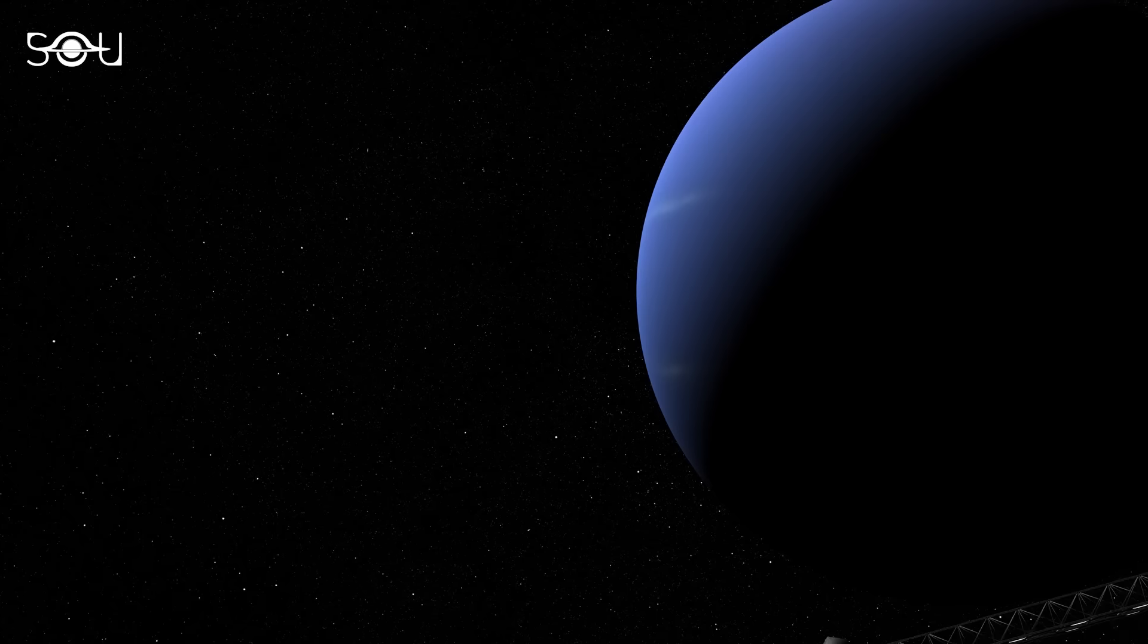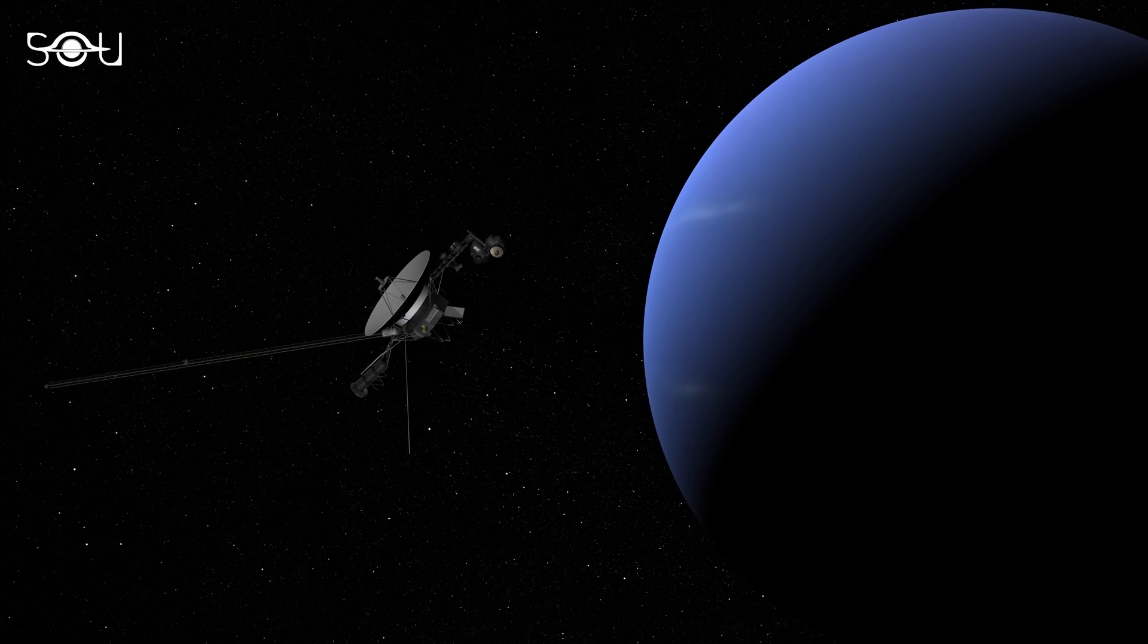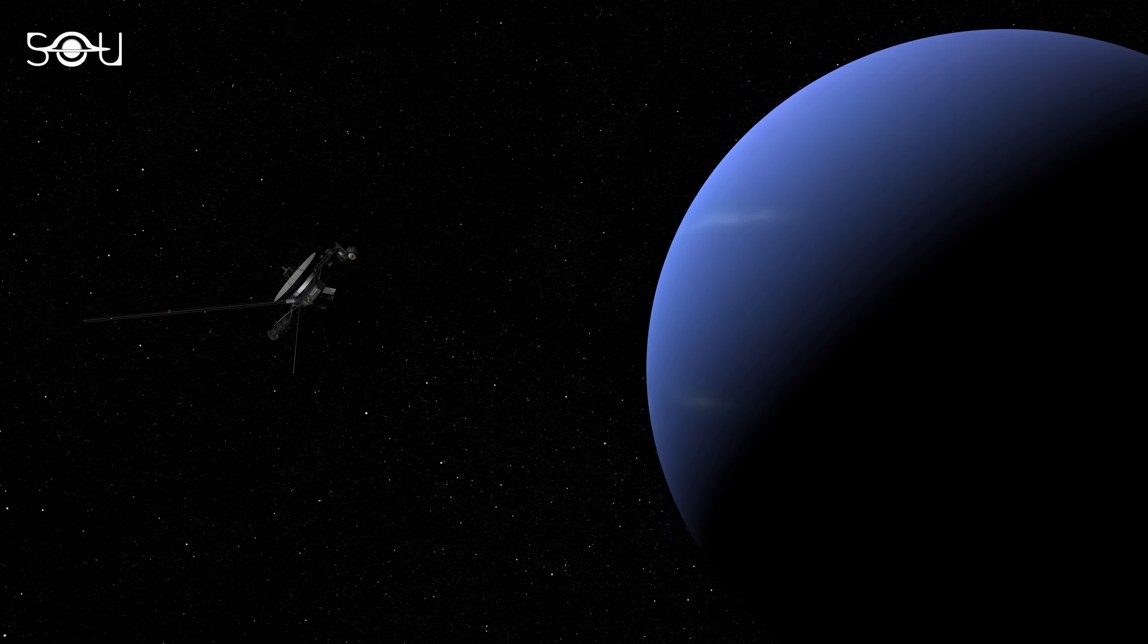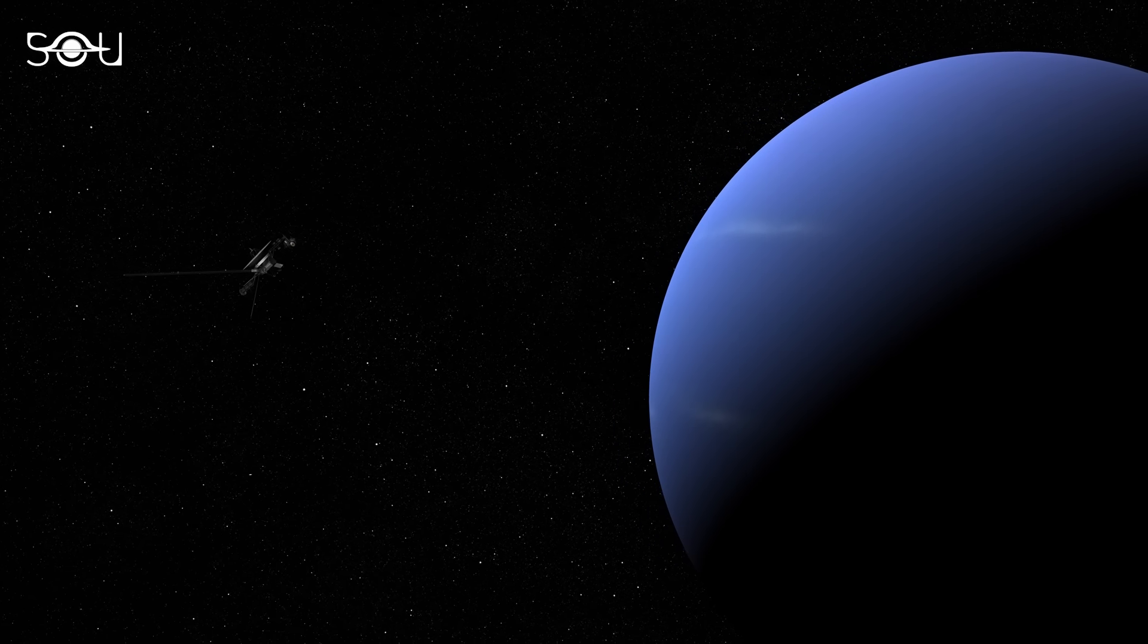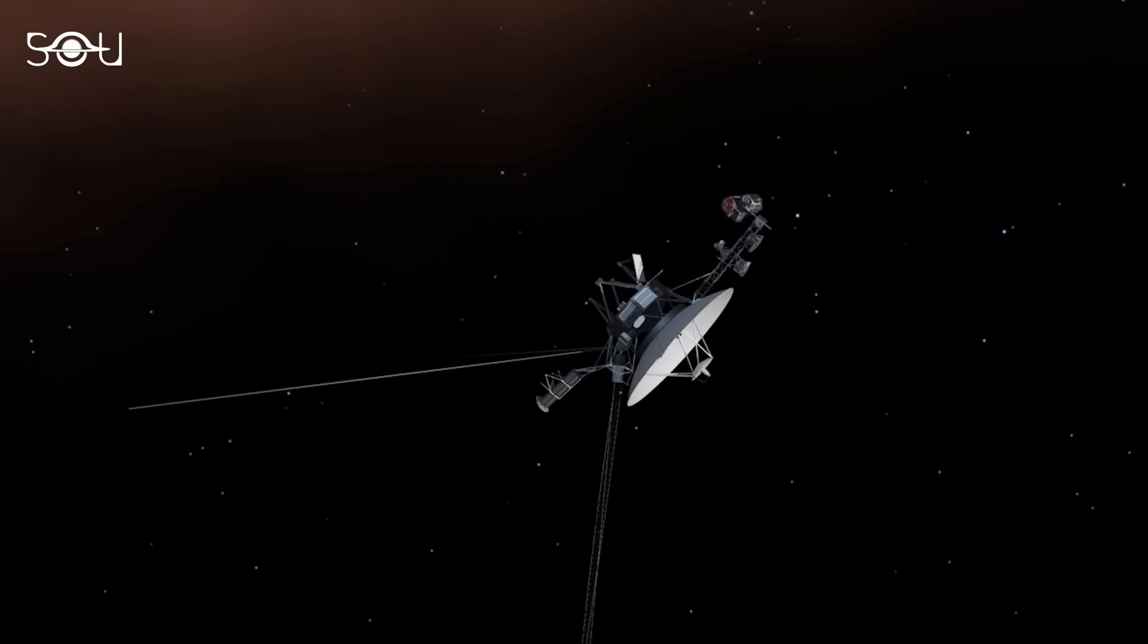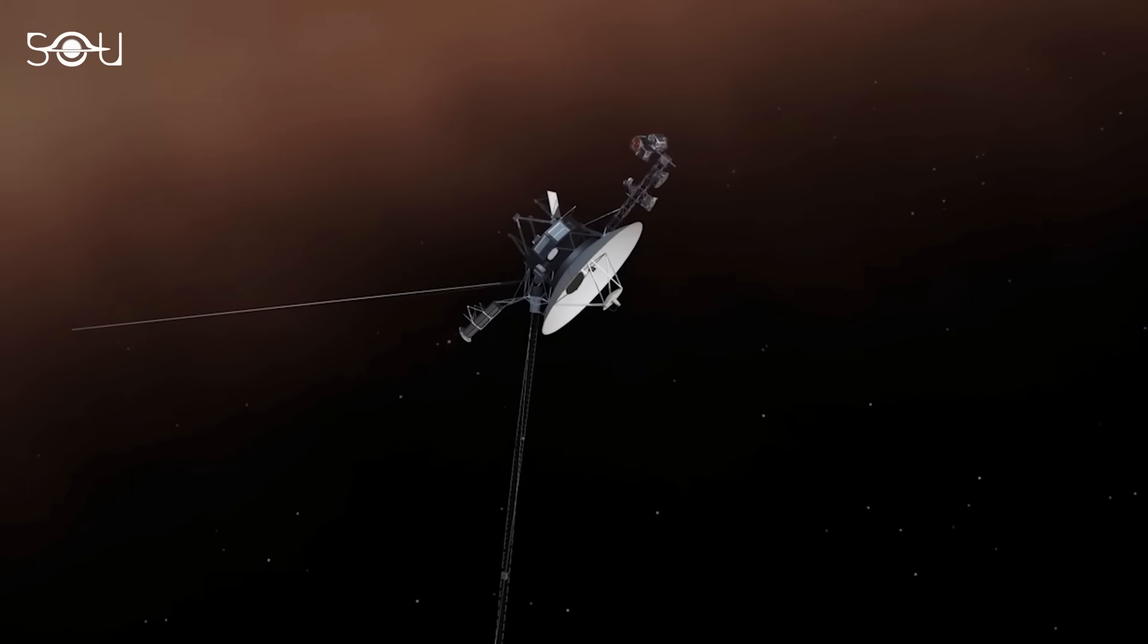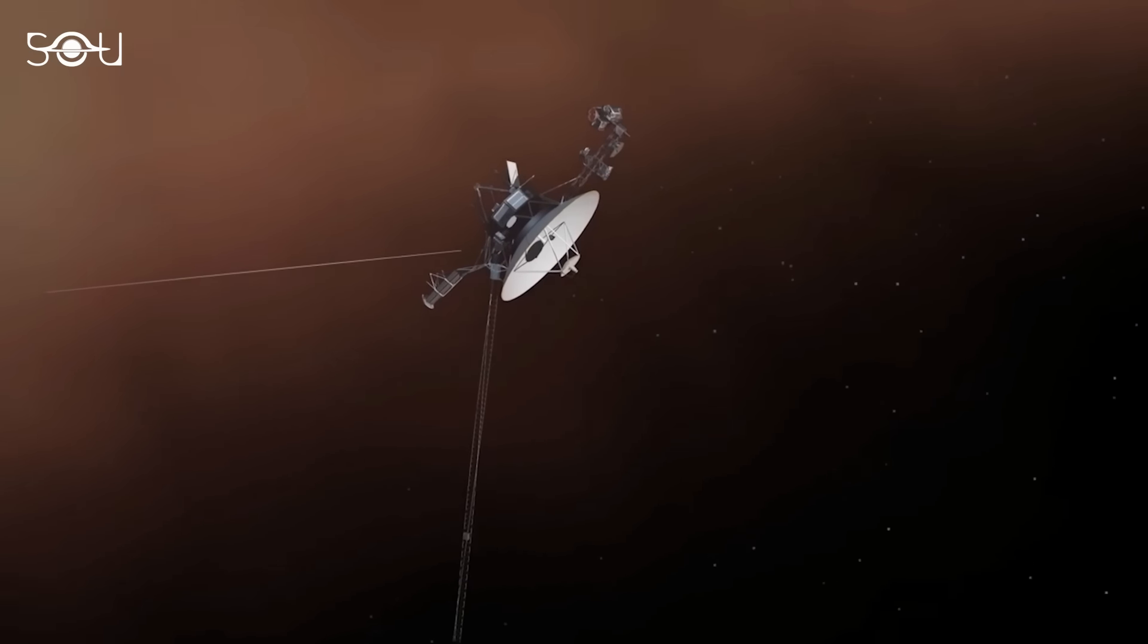So Voyager 1's journey is not just a scientific mission, it's a story of human curiosity and ambition. Looking at what the twins have achieved so far, there is still hope for the recent technical glitch to be fixed. And if this key issue is resolved, scientists are hopeful that the spacecraft will continue until the mission's 50th birthday.